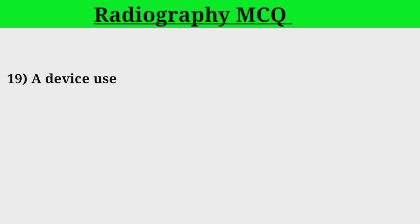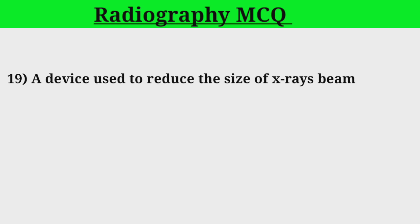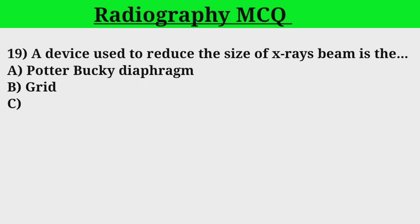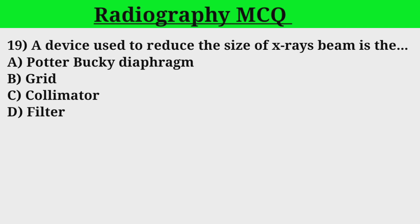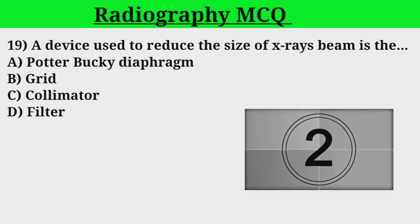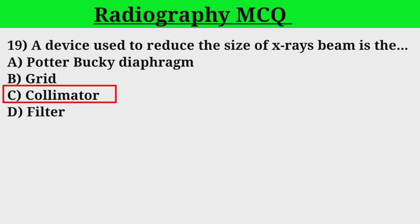Question 19/20. A device used to reduce the size of the X-ray beam is: A. Potter-Bucky diaphragm. B. Grid. C. Collimator. D. Filter. Correct answer: C.